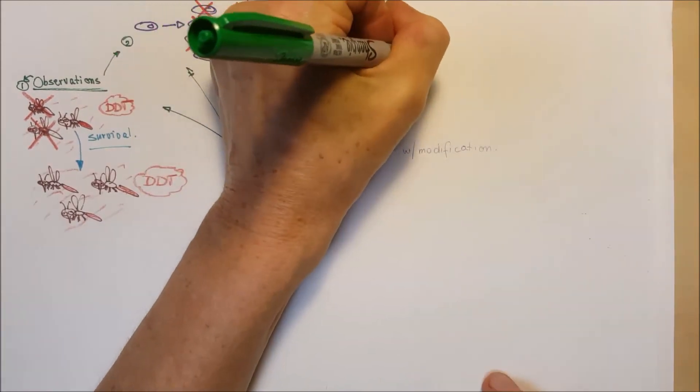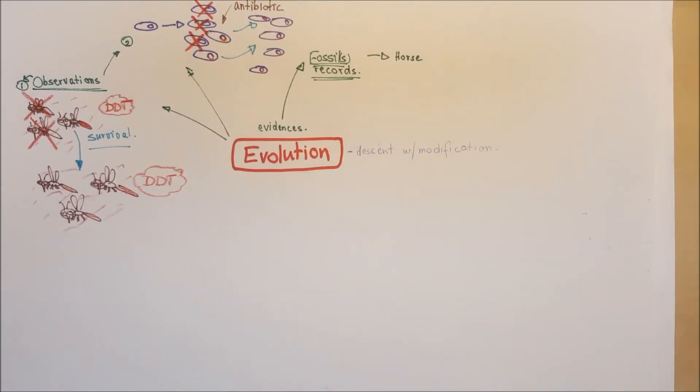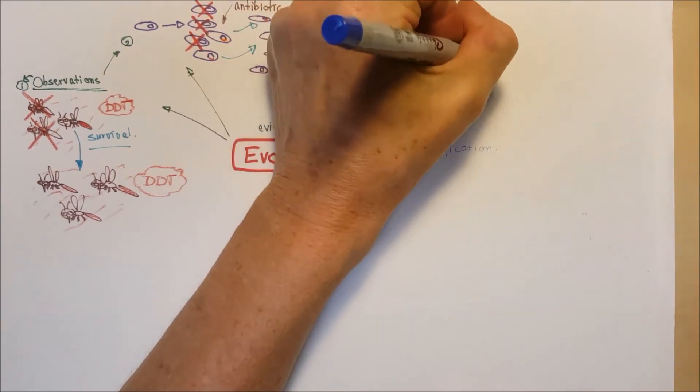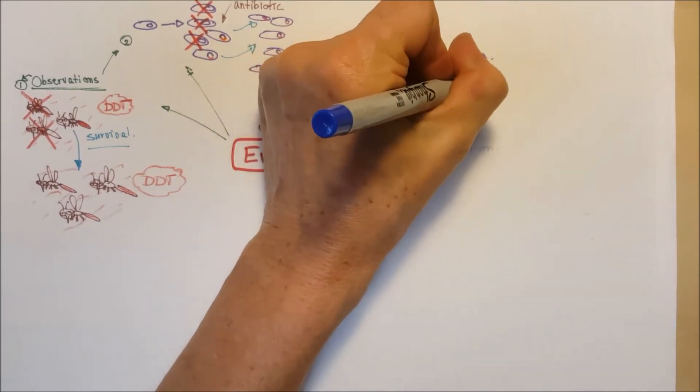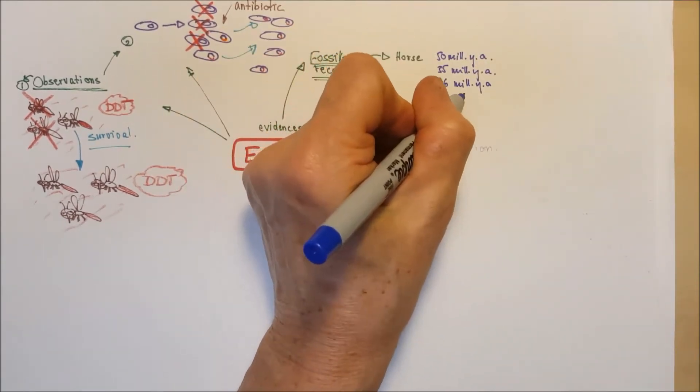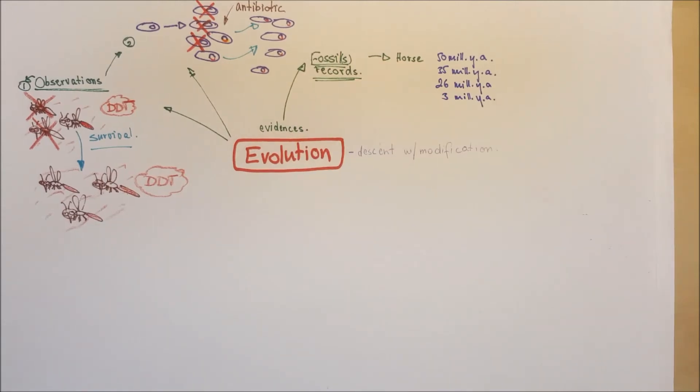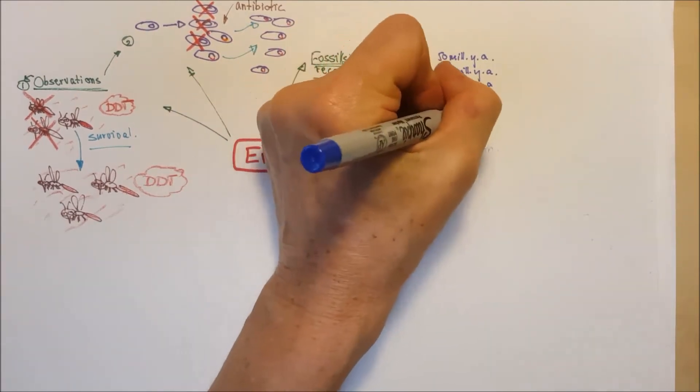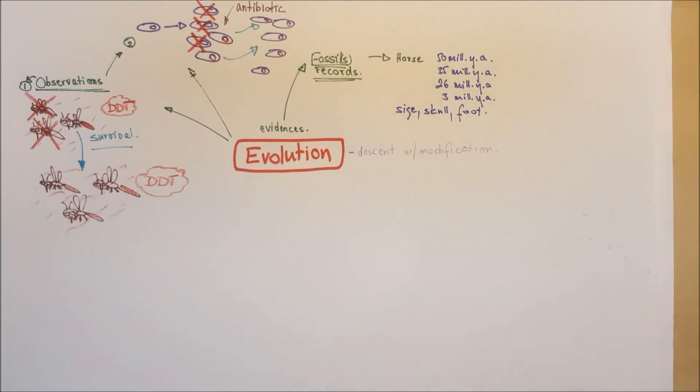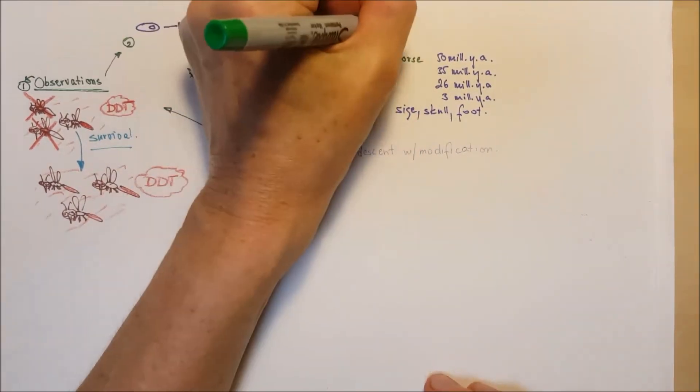Let's talk about very briefly about the horses. Horses, and I cannot draw it, 50 million years ago, 35 million years ago, and up to recent, their size changed. The skull formation changed a little bit, as well as the foot. But the main characteristics still remain the same.